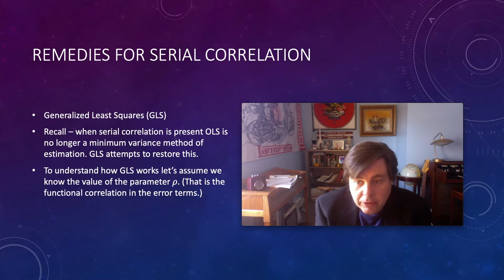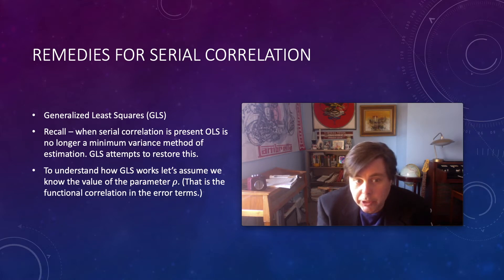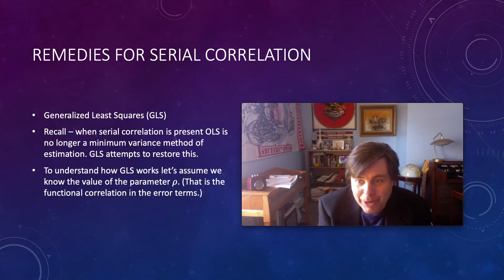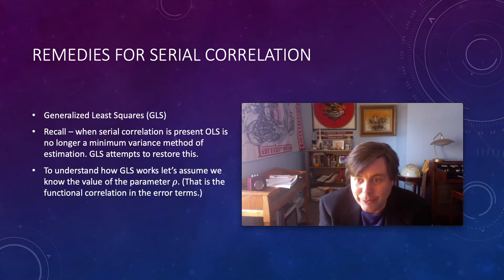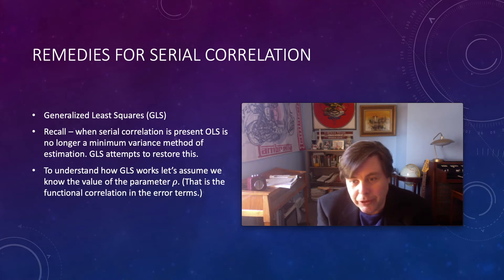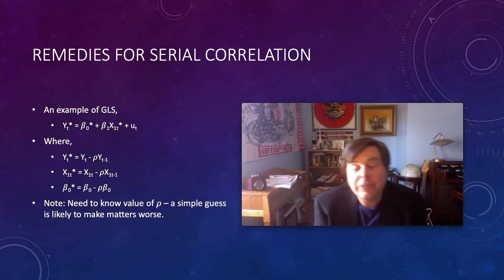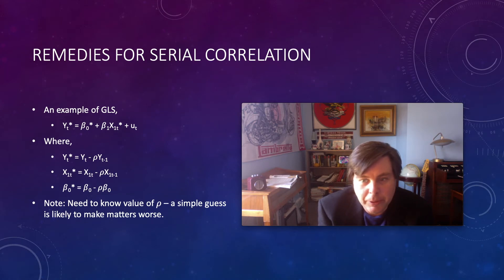What GLS does is attempt to restore the effectiveness of OLS as an estimation process. To understand this correction, let's assume we know the value of the parameter ρ — the functional relationship between the previous error term and the current error term, representing the first-order autocorrelation condition. Consider the hypothesized relationship: y_t as a function of β₀ and β₁·x_t, where the dependent variable in a given time period is a function of one variable x in that time period.